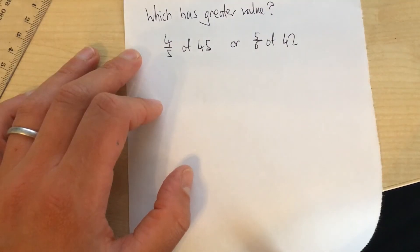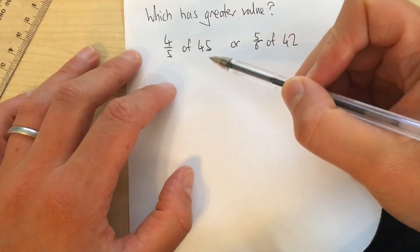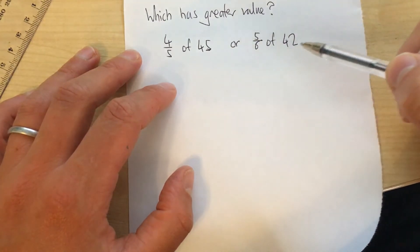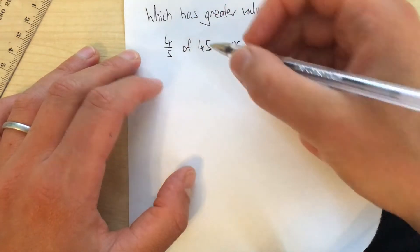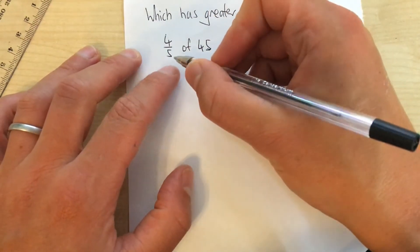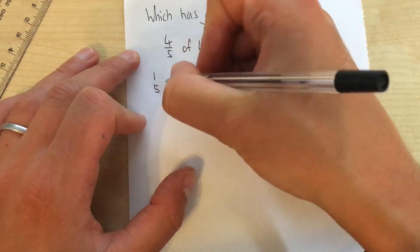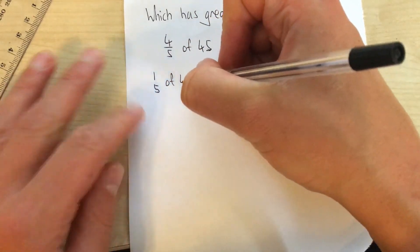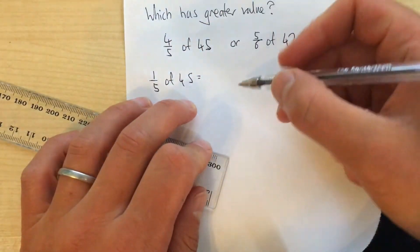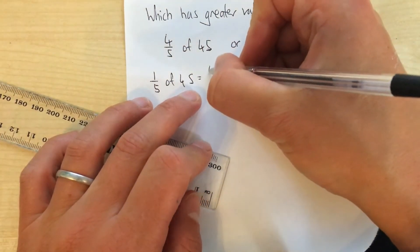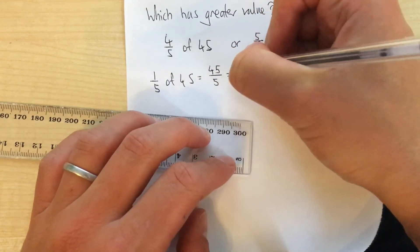Here's another example. Which has greater value? 4 fifths of 45 or 5 sixths of 42? Well, let's work with this one first. First of all, we find 1 fifth of 45. 1 fifth of 45 equals, remember, we divide by the denominator. So here I'm going to do 45 divided by 5, which is 9.